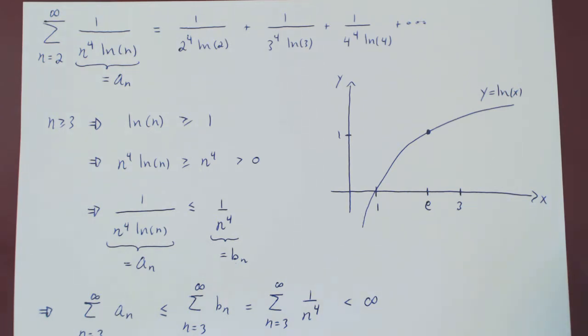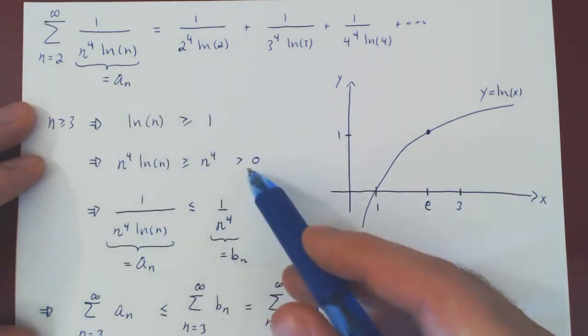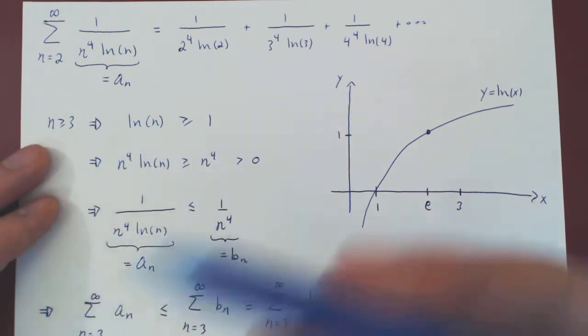we can always ignore the first few terms of the series, and it will not affect convergence. So here, our inequalities could have been valid when n begins at 500, and we would have still reached the same conclusion.